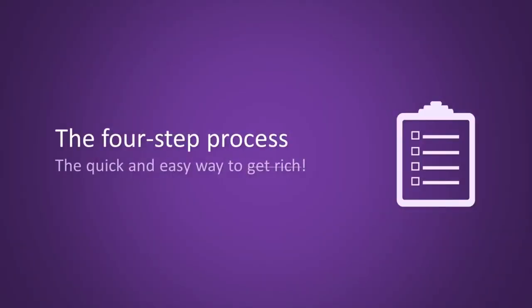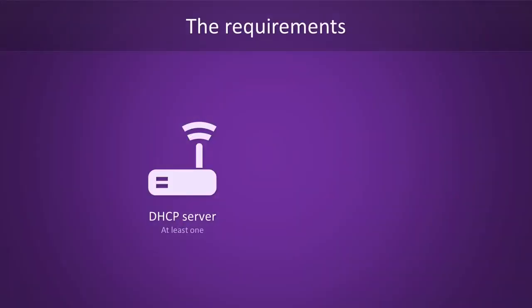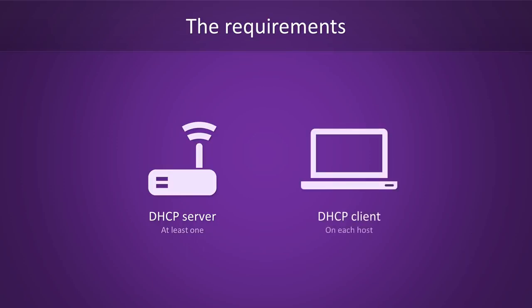Now that you get the gist of it, it's time to look at DHCP's four-step process in a little more detail. DHCP has two requirements, one of which being a server. You'll need at least one DHCP server on your network, but routers usually have one built-in. Secondly, every host on the network needs to run a DHCP client. There are ways to run DHCP alongside static IP addresses in your network, but let's not overcomplicate things right now and leave that aside.